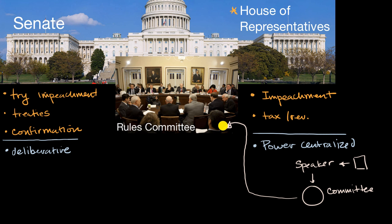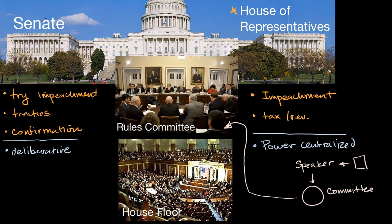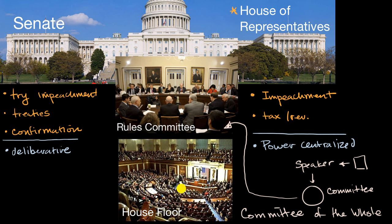The rules committee can decide, assuming a bill gets through committee, to what degree it is debated on the House floor. They can even decide on the rules of debating — they could decide whether it's going to be debated as the House, or as the committee of the whole, which happens in the House chamber and is used for very important or complex legislation where they want to pass it in a more efficient way. The rules committee can also decide if there is a debate, or whether amendments can even be added to bills.